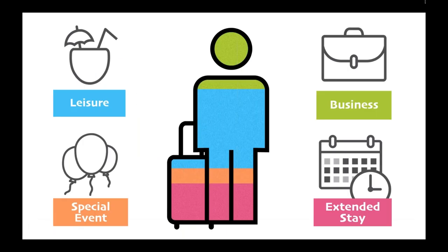For the final guest type we'll look at today, there are four distinct traveler categories: leisure, business, special event, and extended stay travelers. Identifying and organizing your traveler mix into these categories can serve as a blueprint for your hotel's overall marketing strategy. Every traveler in each category is looking for something different — whether that's a leisure traveler looking for a family-friendly location, a business traveler looking for a quiet workspace, a guest attending an out-of-town concert or special event, or someone staying for a week or multiple weeks on an extended stay.